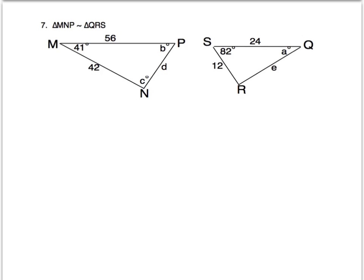So all of these angles are congruent. I see M is the first angle in MNP. Q is the first angle in QRS. And so that means that angle M is congruent to angle Q. So therefore, right off the bat, we know angle A is equal to 41.